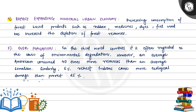The fourth point is rapidly expanding industrial and urban demand. Increasing consumption of forest-based products such as rubber, medicine, dyes, and fuel wood has increased the depletion of forest resources. Due to commercialization and urbanization, demand for these forest products keeps rising, causing further depletion of forests.